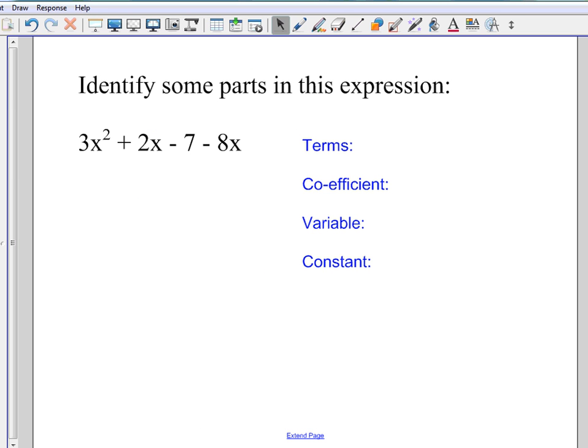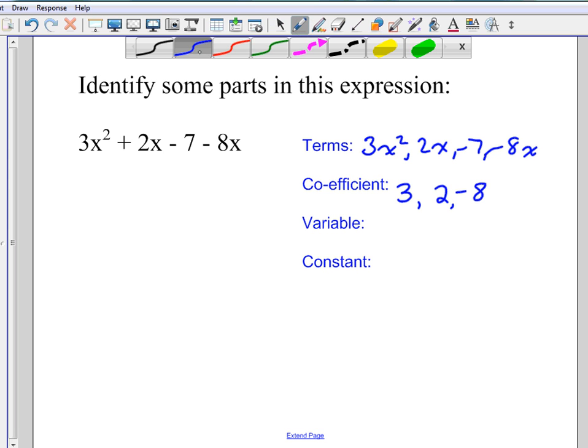So basically now is just a chance to practice. I'd like you to pause the video and try this on your own and then restart it and check if you're right. So here the terms are 3x squared, 2x, negative 7, and negative 8x. Double check that you got the signs right. The coefficients are 3, 2, and negative 8. Again, be careful. Negative 7 is not a coefficient but a constant because it doesn't have any letters. And in this case, the variables are x squared and x.